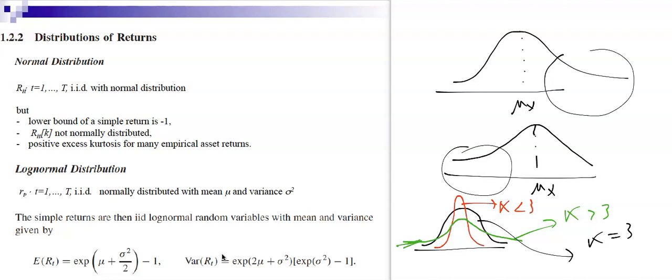Now, what should be a good distribution for the simple or log returns? First, let's try the normal distribution — we already know it will not work well, but let's see why. Imagine R_{i,t} for t = 1 to T is an IID sample. Is it possible that R_{i,t} is normally distributed?